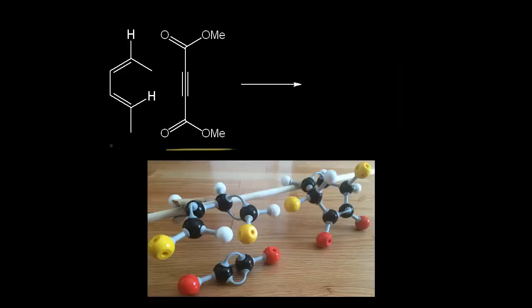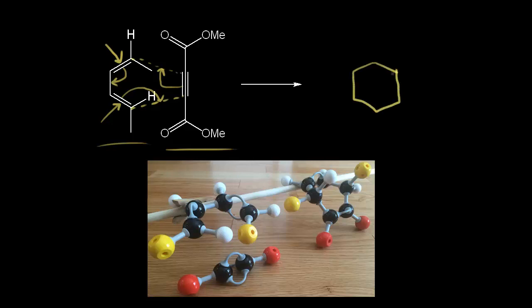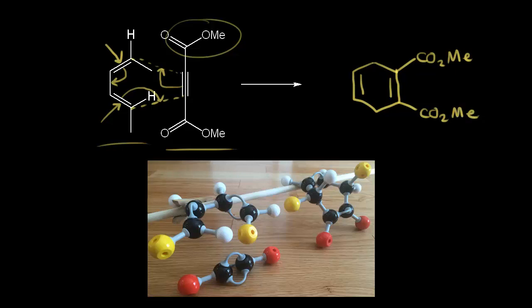For our last problem, we have the same dienophile, but this time our diene has a cis double bond at one position and a trans double bond at the other. Let's first move our six pi electrons: these pi electrons move into here to form a bond between these two carbons, these pi electrons move into here to form a bond between those two carbons, and these pi electrons move down. Drawing our product, we have our ring with two double bonds and esters CO₂Me and CO₂Me. Looking at the inside substituents first, we have this hydrogen and this methyl group — our inside substituents go up.